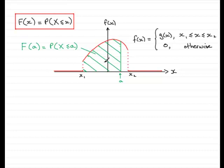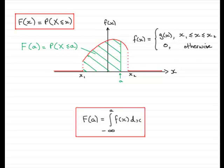That area can be worked out by doing an integral. F of a — the probability of being less than or equal to a — is given by the integral from minus infinity, which is the lower limit of f of x, up to a. We integrate with respect to x the probability density function f of x.